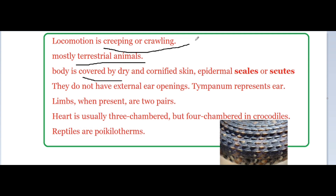The body is covered by dry cornified skin, or epidermal scales, or scutes. You can see the scale shown in this picture — this is a scale of a snake. The skin is hard, dry, and cornified, referred to as epidermal scales or scutes.